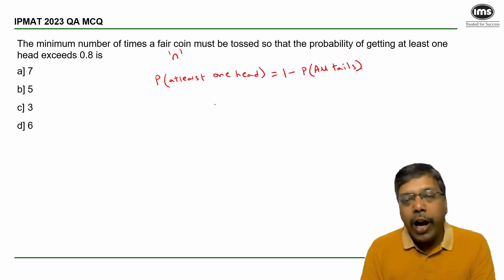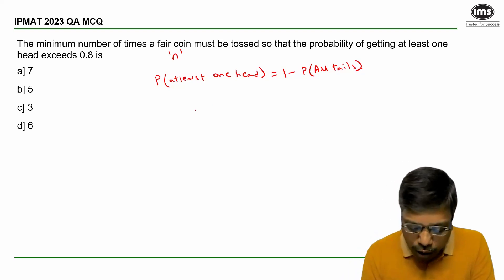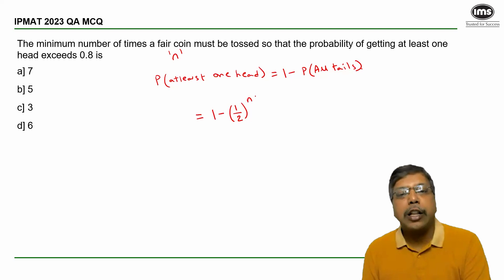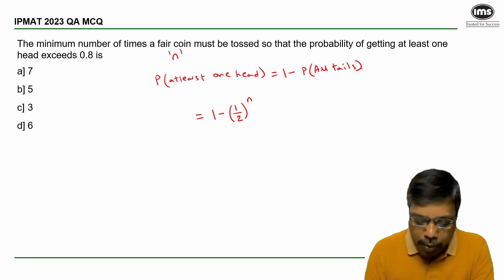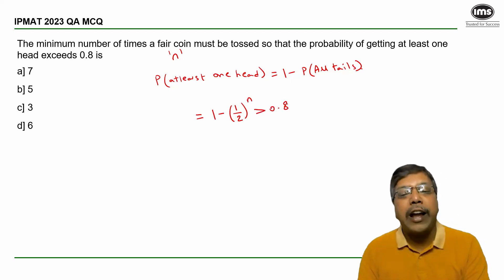When a coin is tossed once, the probability of a tail is 1/2. But if it is tossed n times, then the probability of a tail coming up every time is (1/2)^n. And I want this probability to be more than 0.8 and I need to find the value of n which will make this true.